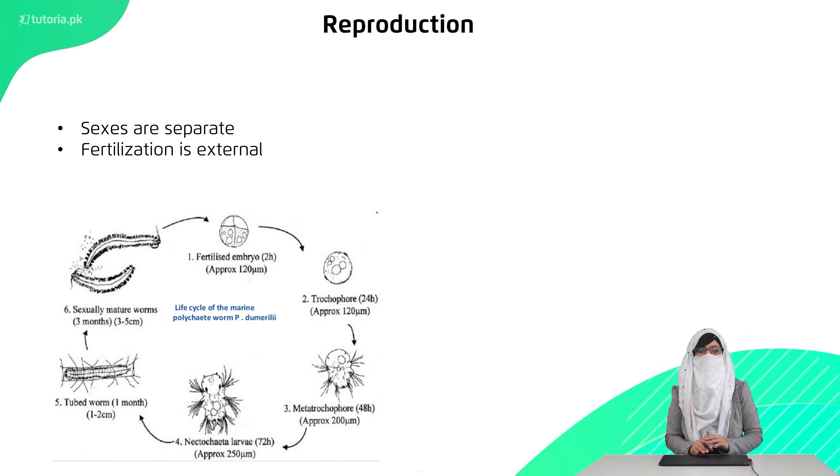If we talk about reproduction, the sexes are different. Fertilization is external. After fertilization, it has a trochophore, which is a characteristic larvae. After fertilization, it is convergent and finally in adult form. These are the only organisms that can reproduce asexually with the help of regeneration ability.